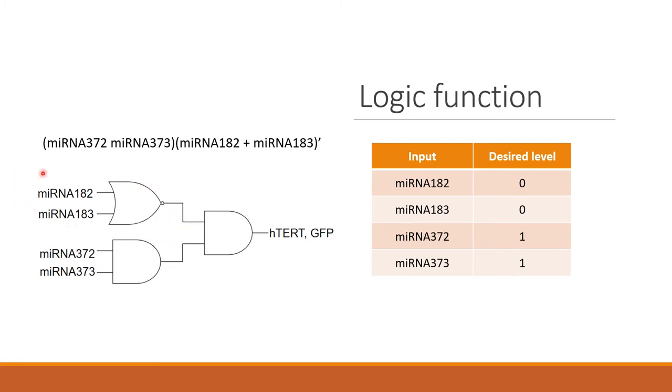So the logic function that we want to implement is that we just want to have an output, which is going to be hTERT and GFP, if we have both biomarkers for replicative senescence and no one of the biomarkers for stress-induced senescence, which is like oncogenic senescence.